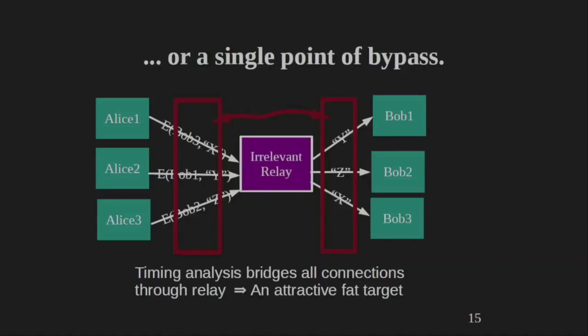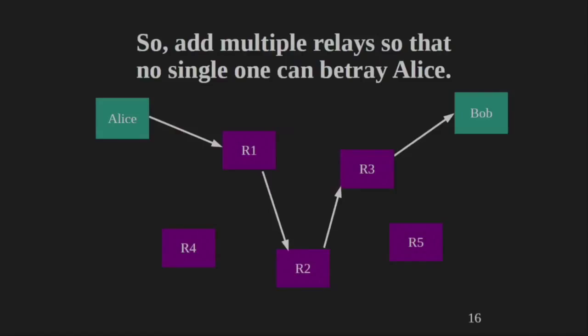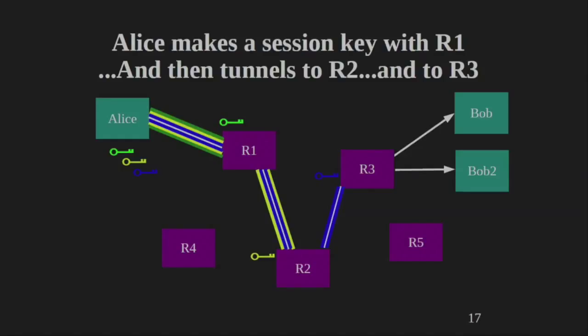The goal of Tor is to distribute trust over multiple volunteer relays around the world so that no single relay knows both where you are and where you're going. If R1, the first relay you connect to, is bad, he knows you're using Tor but doesn't know what you're doing with Tor. If R3 is bad, he knows somebody is connecting to CNN.com but doesn't know who is connecting to CNN.com. If they're both bad and collaborate, they could link the traffic up. So Tor isn't perfect, but it distributes trust so there's no longer a single central place that gets to learn both who you are and what you're doing. And there's crypto — I'll skip over that.